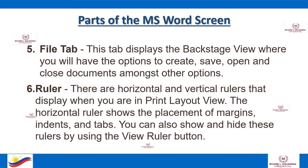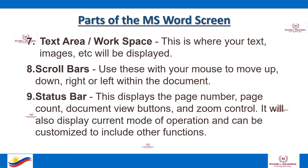The Ruler: there are horizontal and vertical rulers that display when you are in Print Layout View. The horizontal ruler shows the placement of margins, indents, and tabs. You can also show and hide these rulers using the View Ruler button. The Text Area or Workspace is where your text, images, etc. will be displayed. The Scroll Bars are used with your mouse to move up, down, right, or left within the document. The Status Bar displays the page number, page count, document view buttons, and zoom control; it also displays the current mode of operation and can be customized.